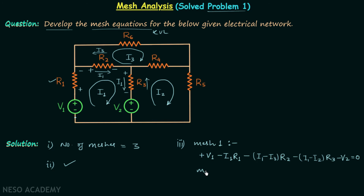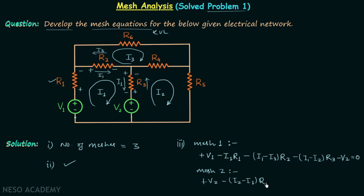Now we develop the mesh equation for mesh number two, moving in the direction of current I2 starting from this point. We have plus V2, then minus (I2 - I1)·R3. We consider I2 to be larger than I1 because we are developing the KVL equation for mesh number two, so I2 is the largest current compared to I1 and I3.